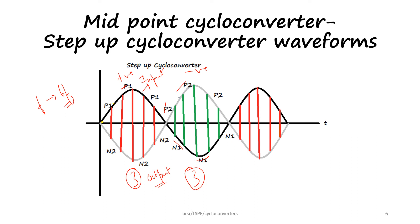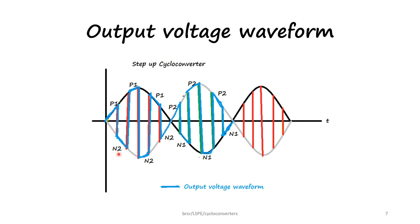The output voltage waveform of a step up cycloconverter is shown here. The black line indicates the input waveform and the blue line indicates the output waveform. For one cycle of the input waveform, there are 6 cycles of output waveform, so this is an F-to-6F cycloconverter — the frequency is stepped up from F to 6F. The same circuit can also be used for stepping down the frequency, which will be explained in the next lecture.